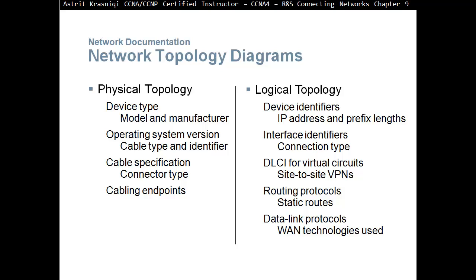Network topology diagrams. We have two types of diagrams we can use: physical topology diagram and logical topology diagram. Now, many places I worked, we did see physical topology diagrams, but hardly saw any logical topology diagrams. Nowadays there are devices that actually create these diagrams for you automatically. In a physical topology diagram, we should have device type, including model and manufacturers, operating system version, cable type and identifiers, cable specification, connector types, and cable endpoints.